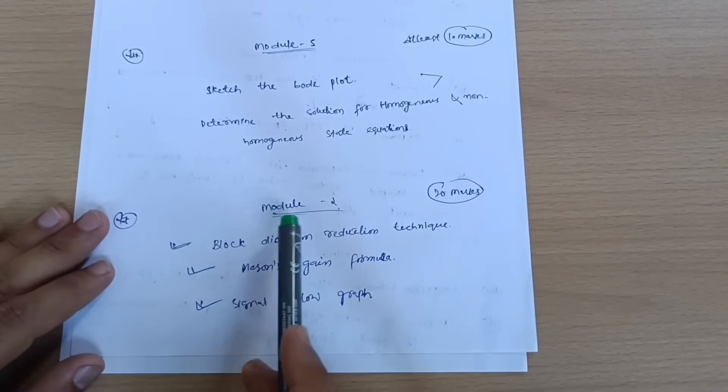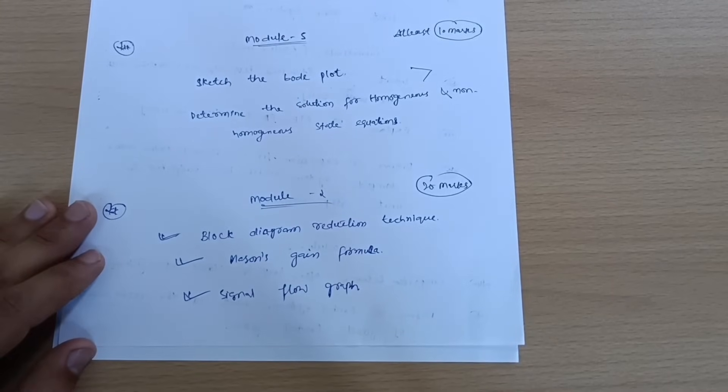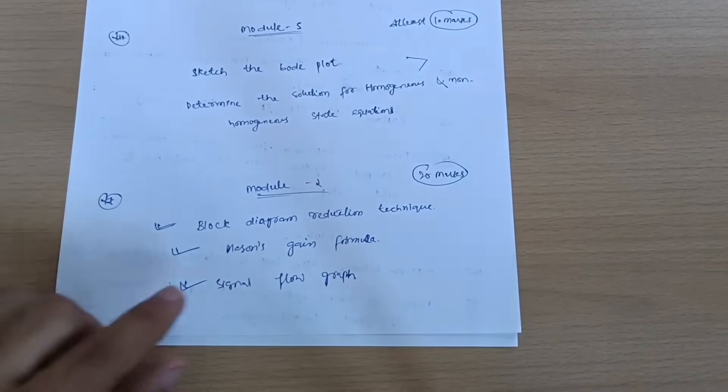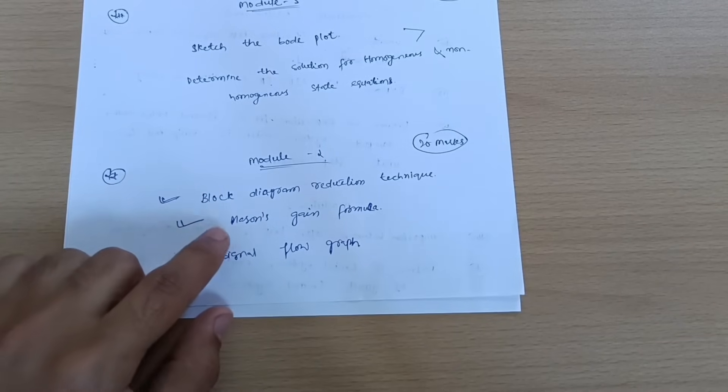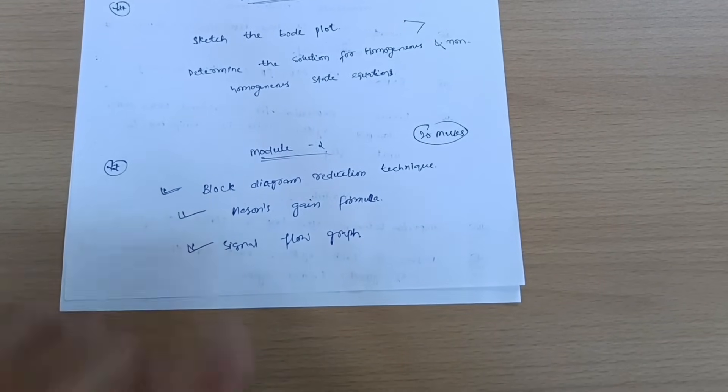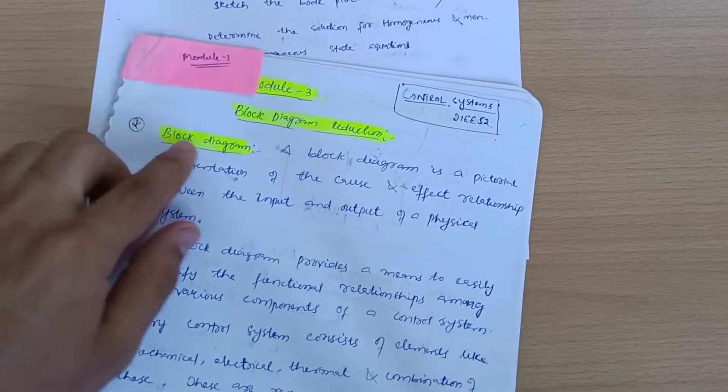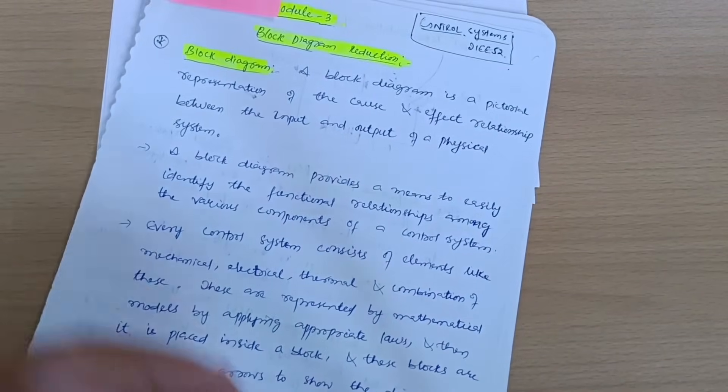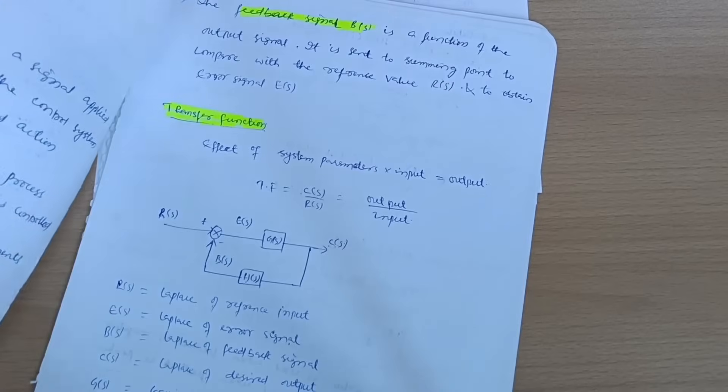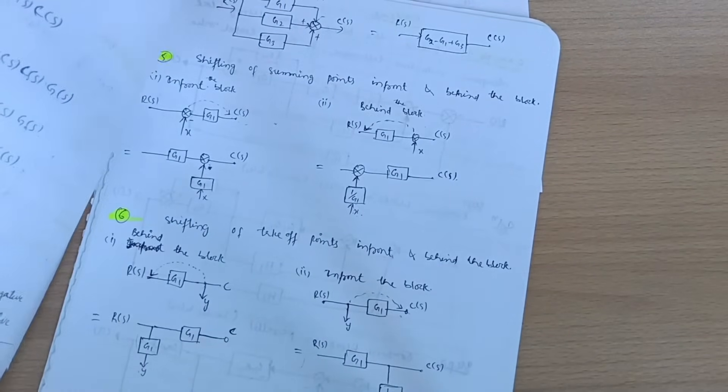Next is 20 marks you can easily get from Module 2, that is Block diagram reduction technique. In order to go through Block diagram reduction technique, you have to use sometimes Mason's gain formula also and go through the signal flow graph. See here the interface of notes. This is the Block diagram reduction. I have written the procedure in detail.